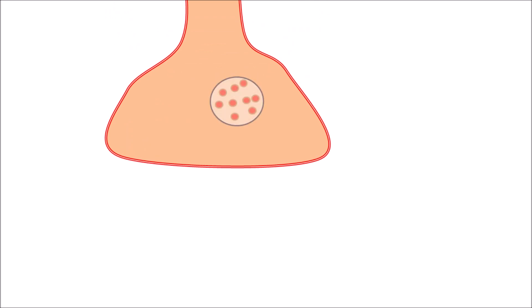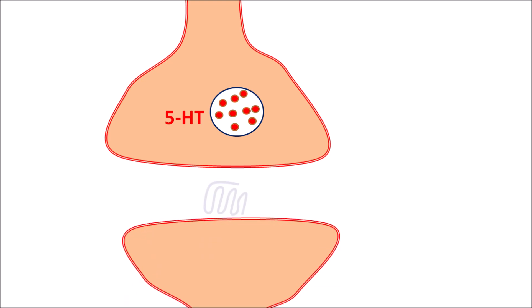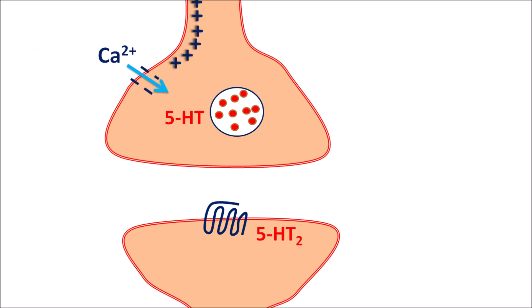Sertraline mainly acts by inhibition of 5-HT reuptake. These are the presynaptic neurons storing serotonin, and these are the postsynaptic neurons expressed with serotonin receptors such as 5-HT2. When an action potential reaches the presynaptic neurons, calcium can enter to produce exocytosis so that 5-HT is released and acts on postsynaptic receptors, producing postsynaptic activation. However, the action of released 5-HT is controlled by reuptake transporters.